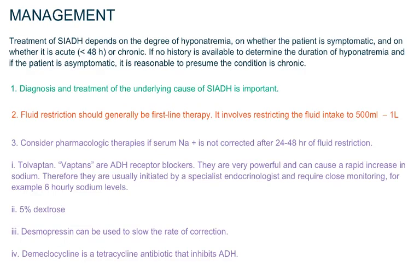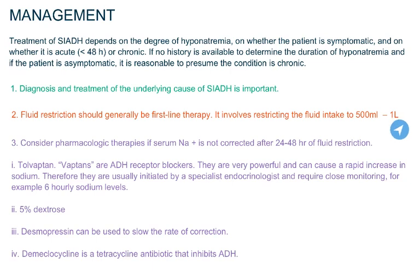Treatment of SIADH depends on the degree of hyponatremia, on whether the patient is symptomatic, and on whether it is acute or chronic. The first step in the management of SIADH is to establish the cause and treat it. The second step is fluid restriction, which involves restricting fluid intake to 500 millilitres to 1 litre maximum.